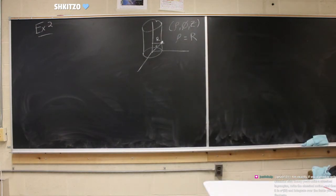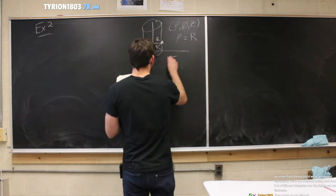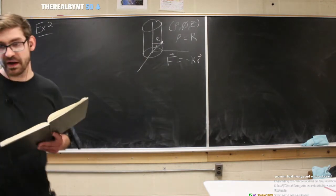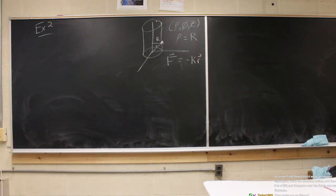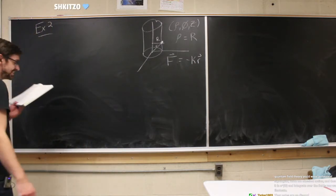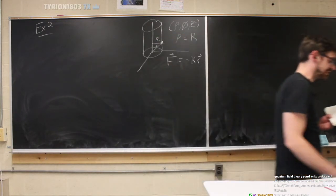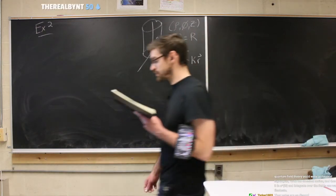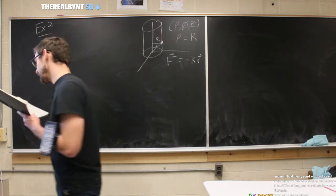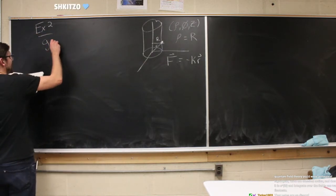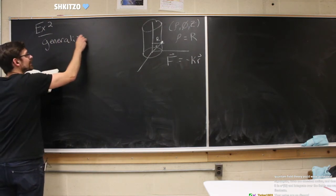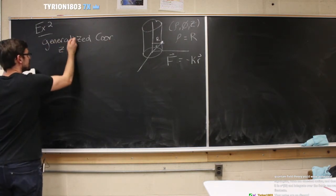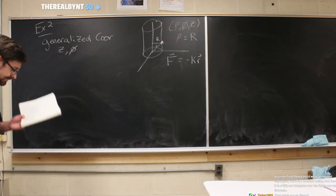We're going to apply a force from Hooke's law in three dimensions, where the force is a radial force equal to minus k times r, and we're going to figure out what kind of motion the particle would have with this force applied. We're considering a particle of mass m on a frictionless cylinder of radius R in cylindrical coordinates rho, phi, and z, where rho equals R — that's the constraint. We have two generalized coordinates: z and phi.